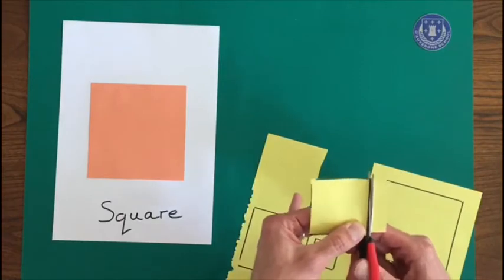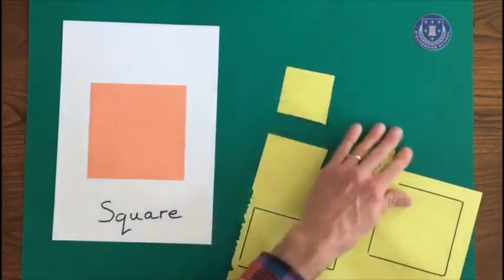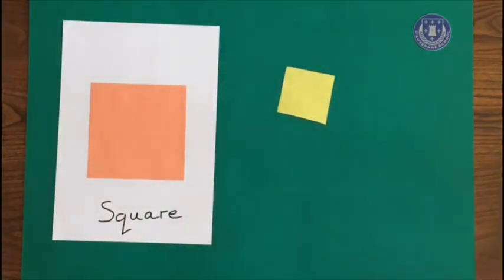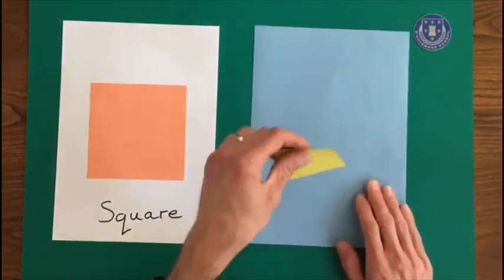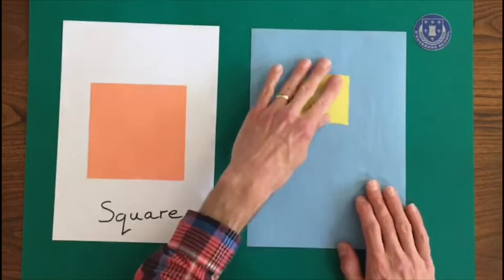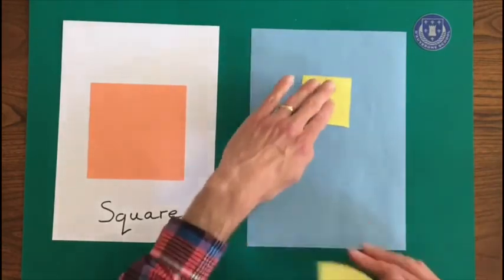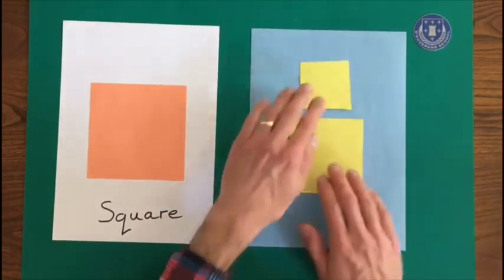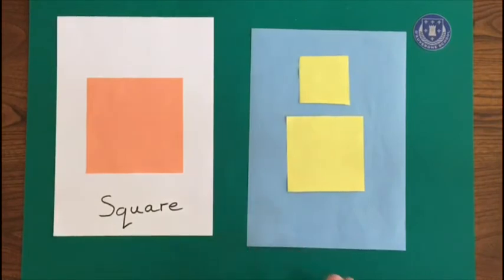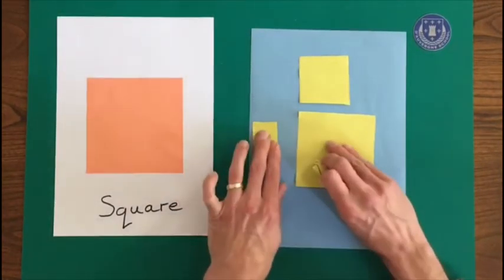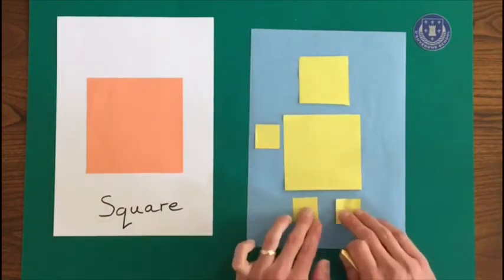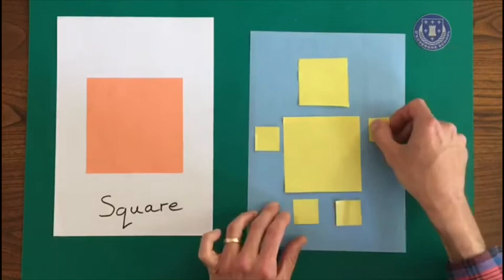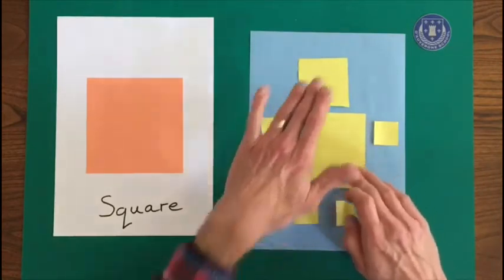So here we go. Here's a square. And then we'll use a nice blue piece of paper, and then use our squares. And we'll place them on to make our robot. There we go. Give them some little hands and feet.